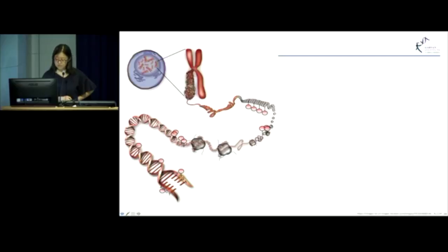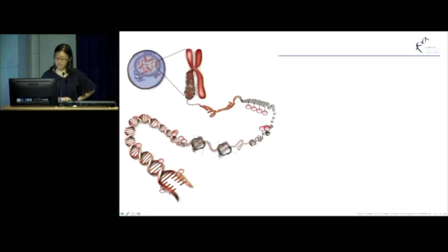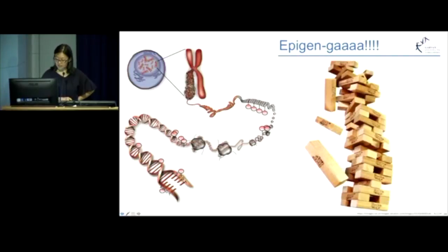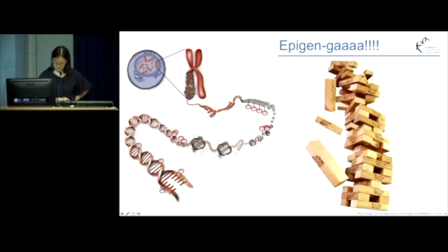The issue with cell division is that every time a cell divides, you need to not only copy the DNA, but you need to copy all of the epigenetic layers as well — and that's a lot of copying to do. Similar to the game of Jenga, if one of these epigenetic layers goes wrong, it can affect every layer above and below it.